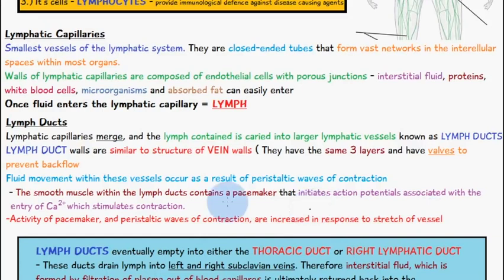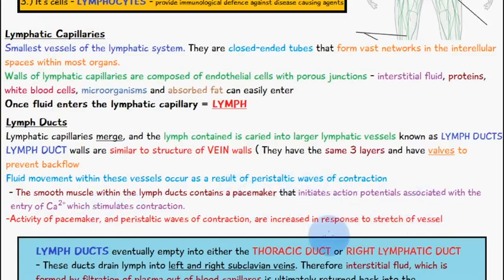So to summarize, in the lymph ducts we have pacemakers in the smooth muscle and there are peristaltic waves which help to squeeze the lymph across. When there is a greater stretch of the vessel, the pacemaker will increase in activity and there will be more peristaltic waves of contraction.